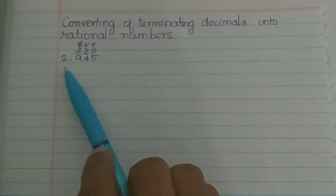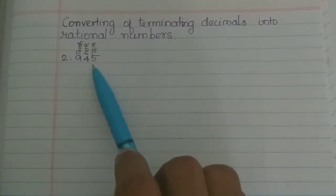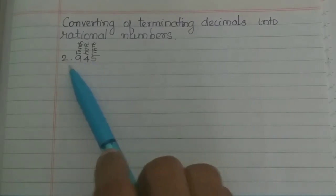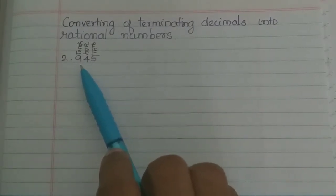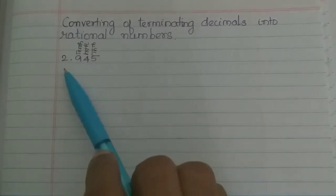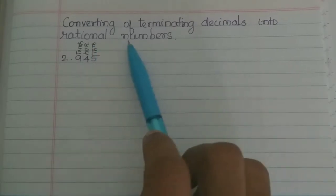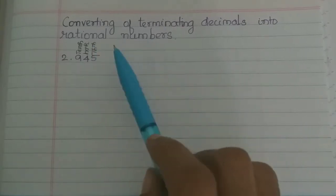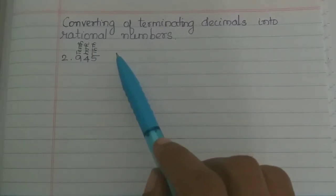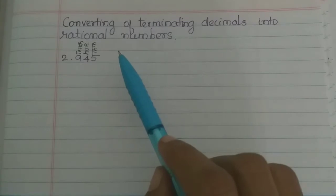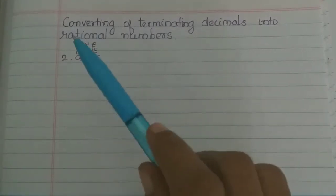Now we have a decimal called 2.945. In 2.945, we have a decimal. If we convert it to a rational number, we will convert it to a fraction.